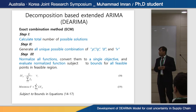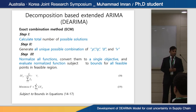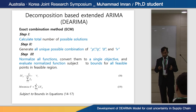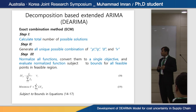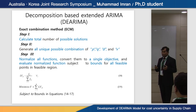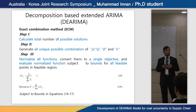The exact combination method consists of the following steps: first, calculate the total number of possible solutions; then generate all unique possible combinations of parameters; normalize all functions and convert them to a single objective; evaluate the normalized single objective subject to bounds within the feasible region; and select the combination of parameters at which the minimum forecasting error is obtained.